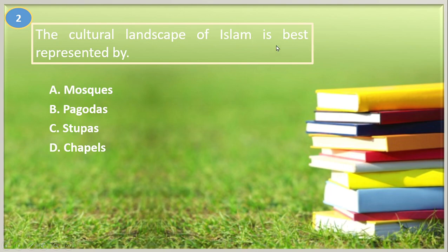Number two. The cultural landscape of Islam is best represented by: A. Mosques, B. Pagodas, C. Stupas, D. Chapels. The answer is Mosques. Pagodas are common for Confucian and Shinto worshippers. Stupas are common for Buddhists, and chapels are common for Christian believers. So the best representation of Islam is mosques.